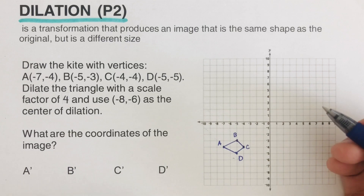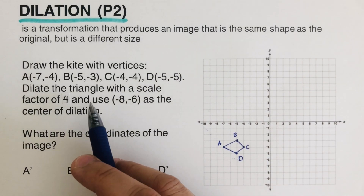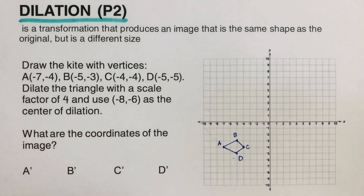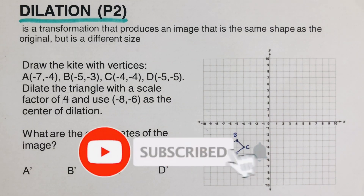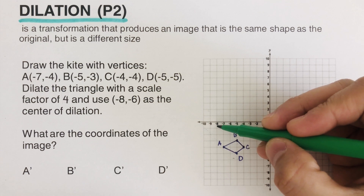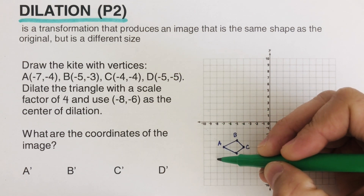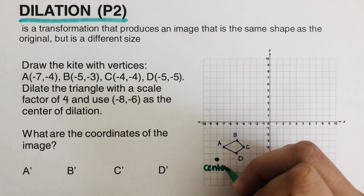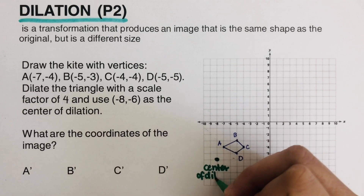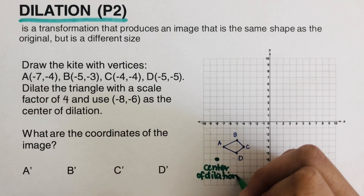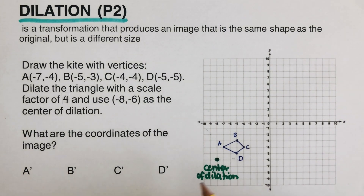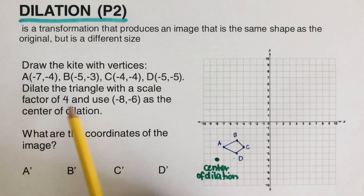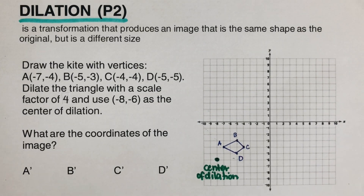Now the problem says we are going to dilate — blow up the kite four times. The center of dilation is at negative eight, negative eight, shown here in green, labeled as the center of dilation. We are supposed to dilate it four times bigger than the original to get the image.